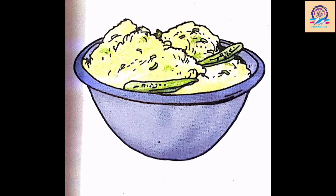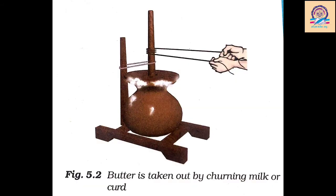The next example is of poha — if you find chillies in it, you take them out before eating. So in this way you separate the chillies from poha. The last example is of milk or curd being churned to separate the butter. Churning is nothing but shaking milk or curd to make butter, and in this process the butter is separated — so this is also a separation process.